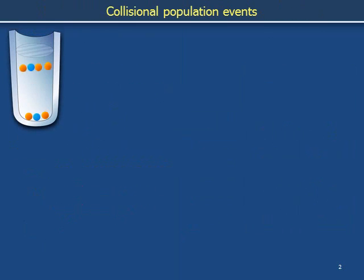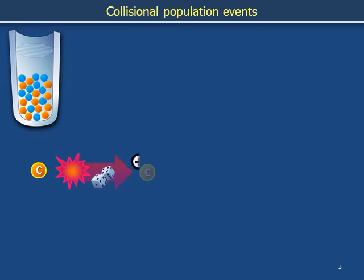Consider a test tube filled with cells. Some of the cells are orange or copper colored while the other cells are blue or denim colored. The cells are stirred vigorously to maintain the proportion of copper to denim cells as uniformly as possible throughout the test tube. On occasion a copper cell might undergo a birth, meaning a duplication or so-called replication event. We notate this event using a chemical reaction equation indicating that one copper cell becomes two copper cells in a reaction with rate coefficient F0.